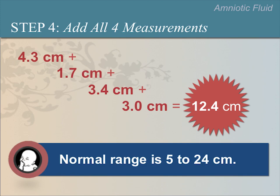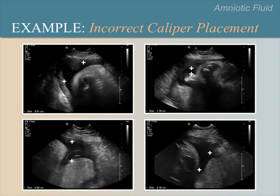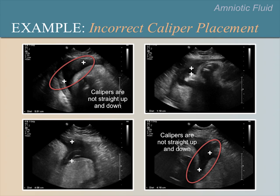Here are several examples of incorrect caliper placements to measure the size of the amniotic fluid pockets. Please pause the video now to ask participants why these caliper placements are incorrect. In the upper-left and lower-right images, the calipers are not straight up and down from each other. In the lower-left image, there is umbilical cord in the vertical path connecting the two calipers. In the upper-right image, the top caliper was placed too low, which means the measurement for this pocket is smaller than it should be.